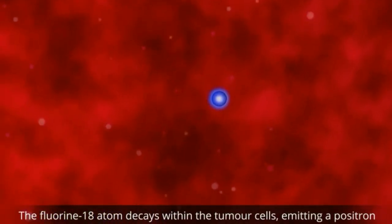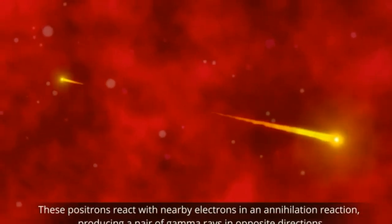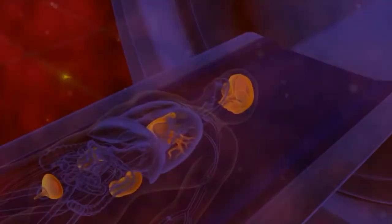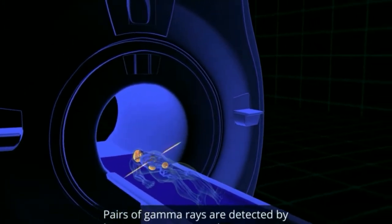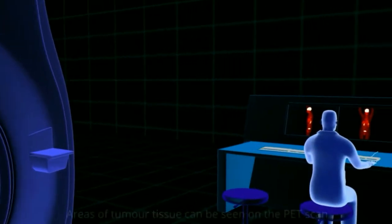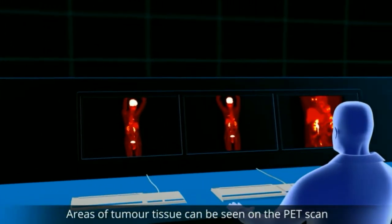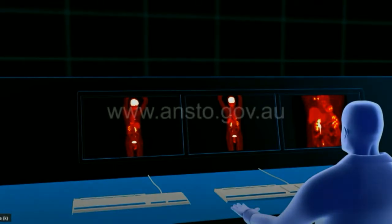There it decays, it made a positron. That positron will have an easy time finding an electron in your body. And there's the two gammas, say, going in the opposite directions. And so what's done is your body is put in this ring of detectors. And then, from the detectors, an image is able to be constructed that shows where the counts, where the gamma rays are coming from.